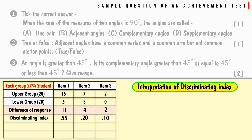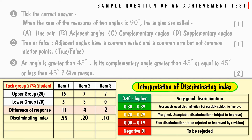Interpreting the discrimination index using the discrimination index table: item number 1 is a good item — select it. Item number 2 is a marginal item — it can also be selected. But item number 3 is a poor item — it must be rejected.